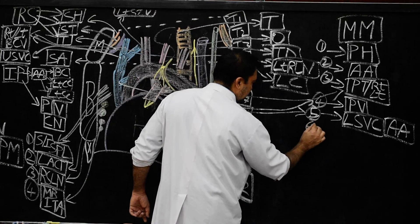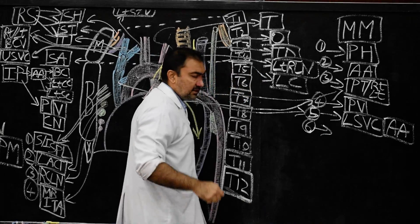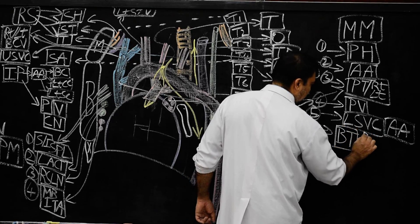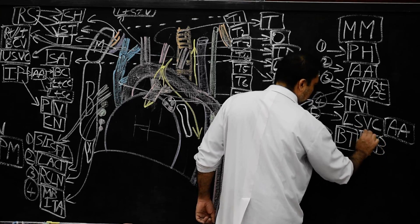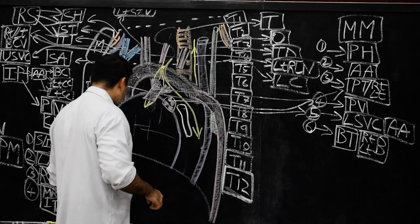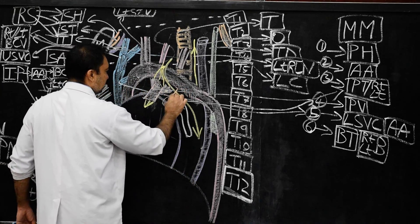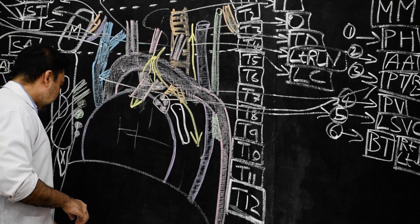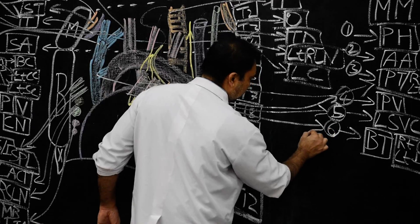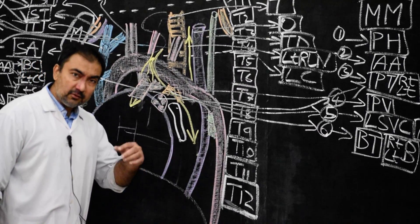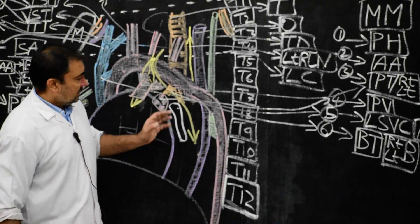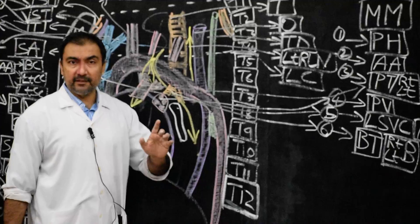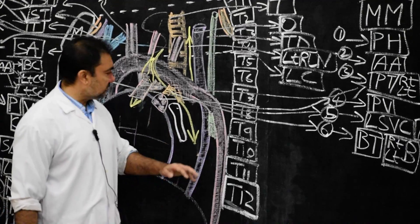Structure number six: the lower part of the trachea, the bifurcation of trachea, which bifurcates into the right and left bronchi. The bifurcation including the right and left bronchi. Along with that, the lymph node located here will be the inferior tracheobronchial lymph nodes.